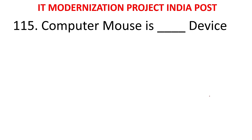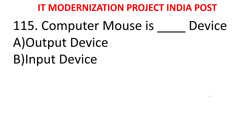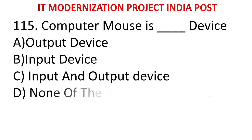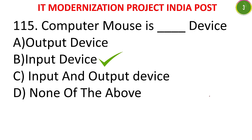MCQ 110: Computer mouse is a - A) Output device, B) Input device, C) Input and output device, D) None of the above. The answer is input device.